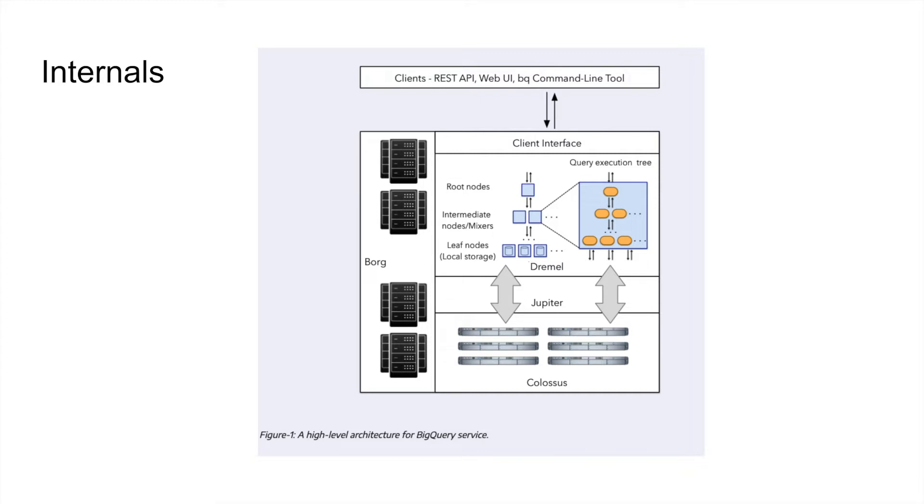BigQuery stores our data into a separate storage called Colossus. Colossus is generally a cheap storage which stores the data in a columnar format. This has a big advantage. Because BigQuery has separated the storage from compute, it has significantly less cost. If your data size increases tomorrow, you generally only have to pay for the storage in Colossus, which is very cheap. The most cost occurs while reading the data or running the queries itself, which is basically compute. And that's why separating these two parts has a lot of advantages for BigQuery.